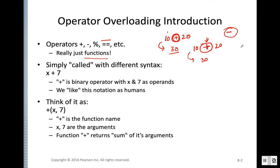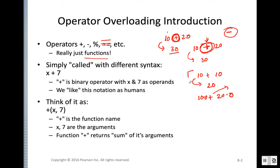All operators are nothing but functions, and how these operators work is already defined in our program. Our compiler knows how to execute the plus operator, the minus operator, and all other operators. Our C++ program knows how to execute these operators with primitive data types. If there are two integer numbers the result is another integer; if there are two double numbers the result is another double. That's how the functionality of all operators has been defined.